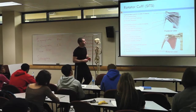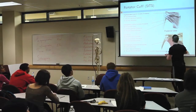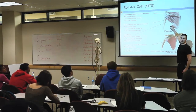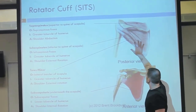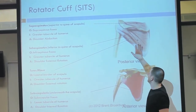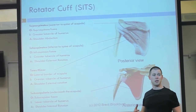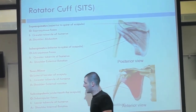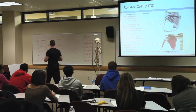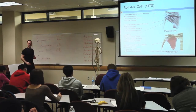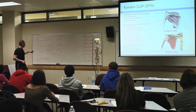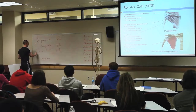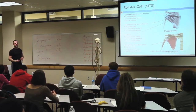Teres minor — you can see how the teres minor and the infraspinatus kind of blend. The teres minor definitely comes off the lateral border of the scapula. It doesn't go all the way over like the infraspinatus does, but they kind of blend and go in the same direction, which means they probably contribute to the same joint action. They're both going to do external rotation. If you remember your rotator cuff is your SITS muscles, it externally rotates.